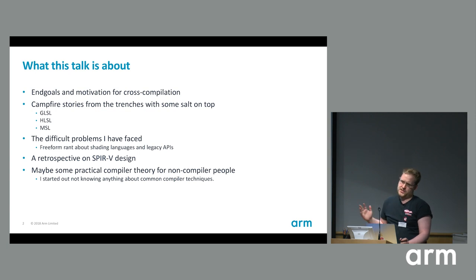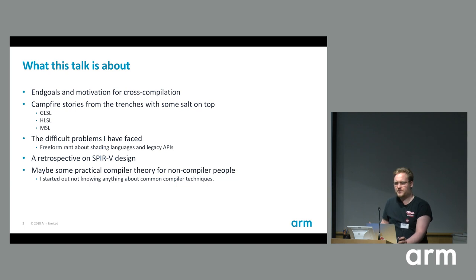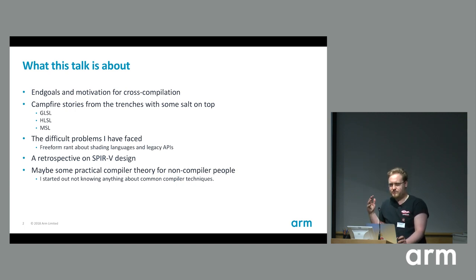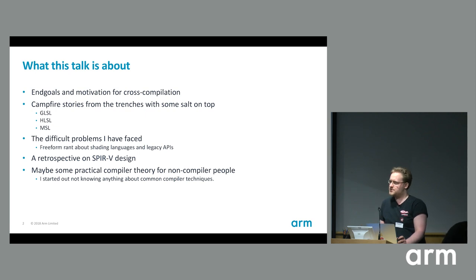This is not about reflection — it's about cross-compilation, which is actually a difficult problem to solve. I'll talk about the end goals of this stuff, then some campfire stories about how all the shading languages are basically broken and need to be fixed. Various difficult problems I've found implementing this thing, and how SPIRV is designed and how that has shaped cross-compilation. If you're not a compiler nerd, you might learn some new interesting things, because I've had to learn basically everything from scratch.